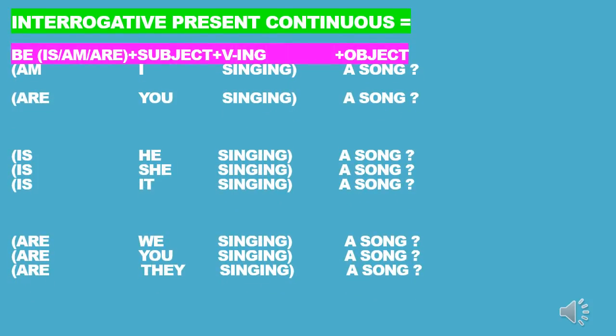Slide 4, the Present Continuous Interrogative. For the interrogative present continuous, we put the verb to be in the first position, then followed by the subject, followed by the verb-ING, and last followed by the object.